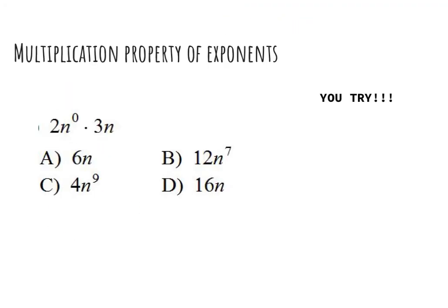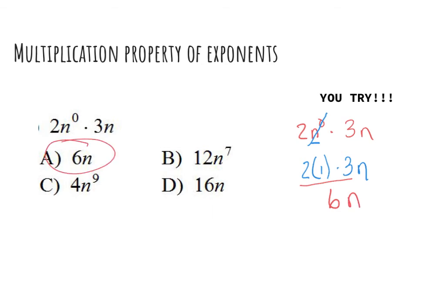Now you try — recall what the zero power means and choose the correct response below. So first we recall that n to the zero power just means 1. I'm going to rewrite where n to the zero power is with the number 1, and then simplify my numbers. So 2 times 1 is just 2, and then 2 times 3 is 6. There is no other n — it's just one of the n's. So my correct answer would be A.